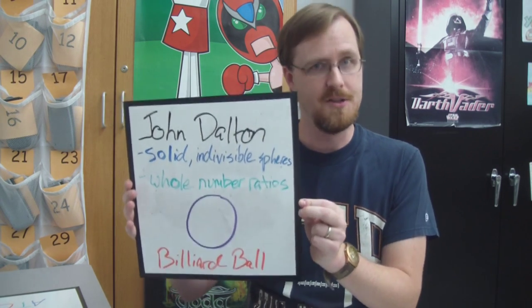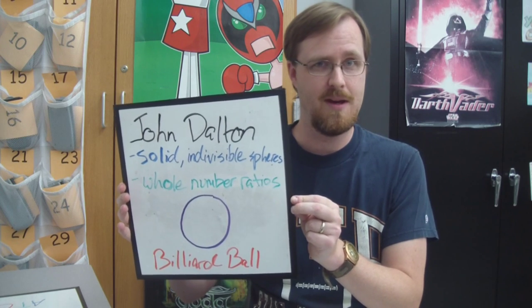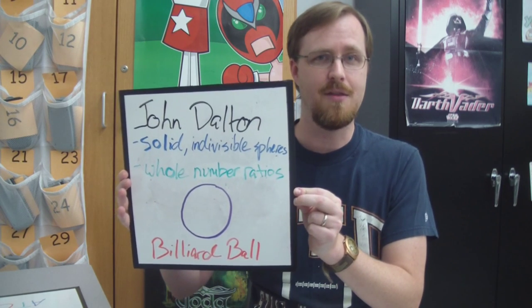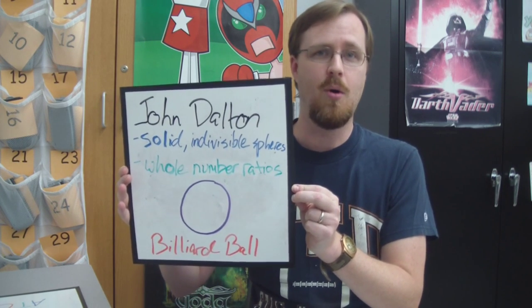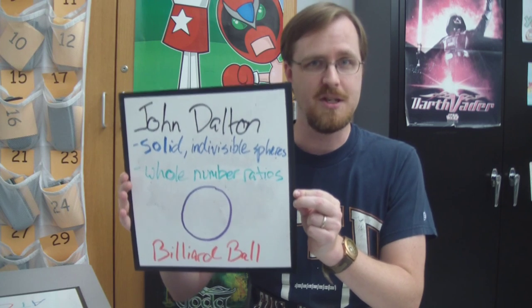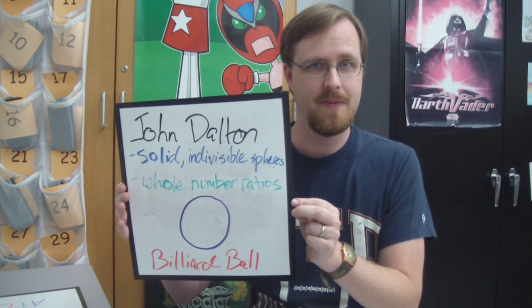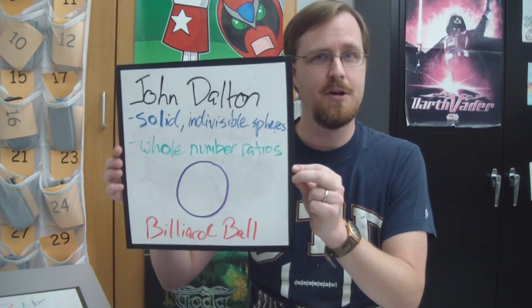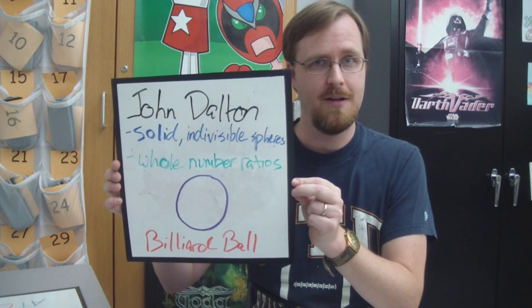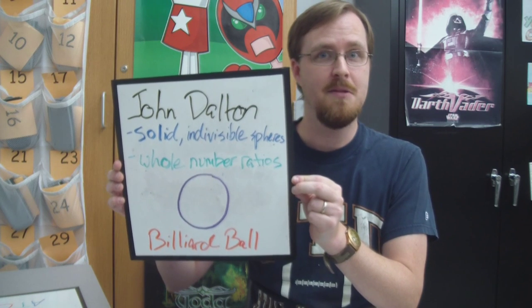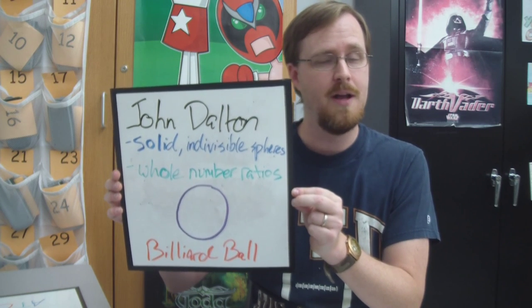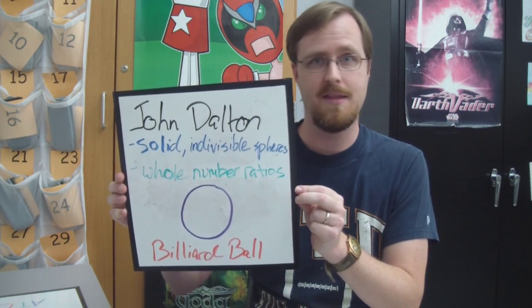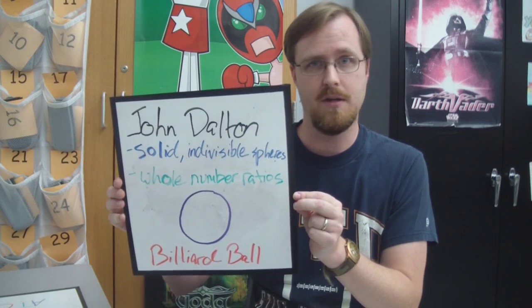He also said that when atoms form compounds they come together in whole number ratios. He called his model the billiard ball model because, like a billiard ball, atoms couldn't be split into anything smaller.